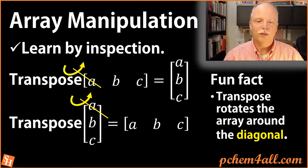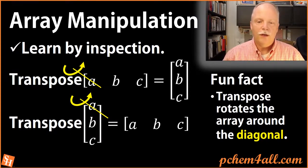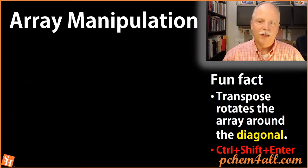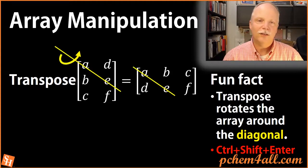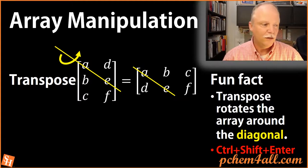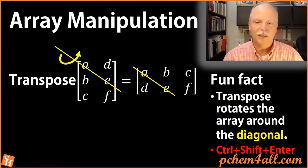If we transpose a column array, it becomes a row. If we take a block of data, which is called a matrix, we can still transpose it. The diagonal is defined by the values a and e. If we rotate this matrix around that diagonal, b moves to the top and c and f move to the top as well, but a and e remain unchanged — they're on the diagonal.